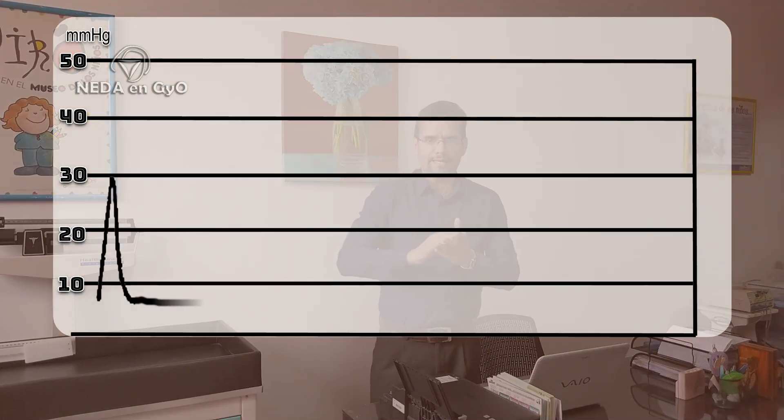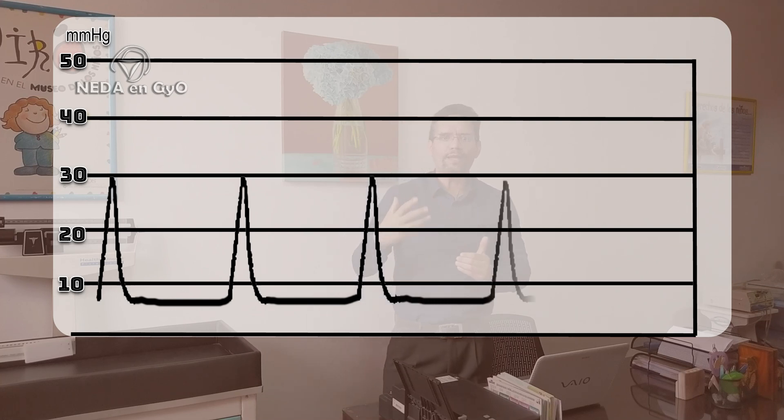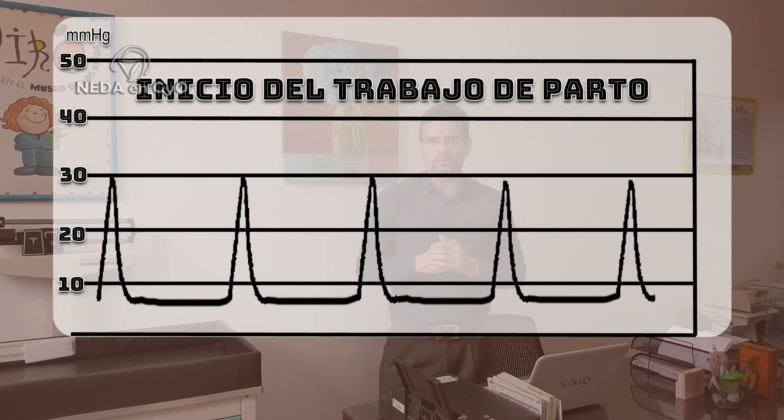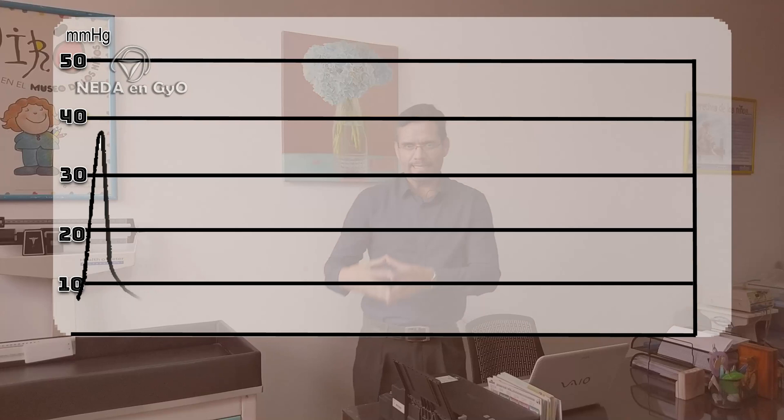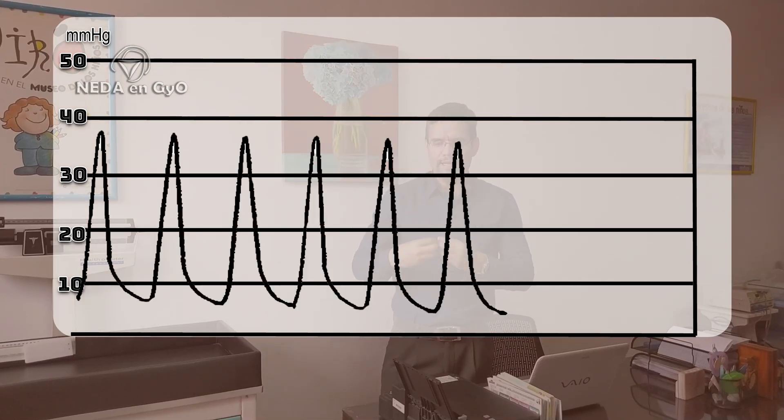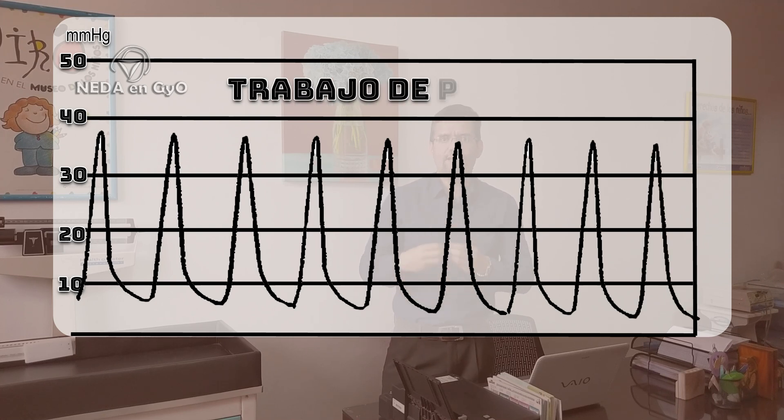These Braxton Hicks contractions will continue increasing as time passes. At the end of pregnancy and close to the process of labor, there will be a significant increase in the intensity and frequency of these contractions. They will reach a point where contractions approach 30 mmHg with a frequency of up to 3 contractions in 10 minutes — which marks the beginning of labor and represents the intensity and frequency of the beginning of the active phase of labor.